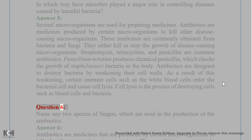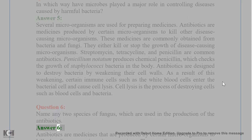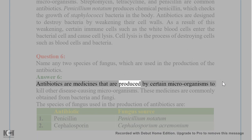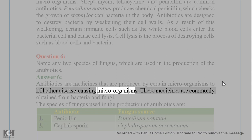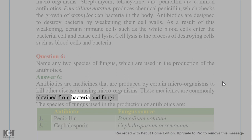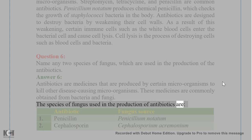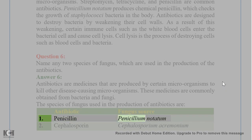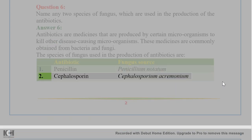Question 6. Name any two species of fungus which are used in the production of antibiotics. Answer 6. Antibiotics are medicines produced by certain microorganisms to kill other disease-causing microorganisms, commonly obtained from bacteria and fungi. The two fungal species used in antibiotic production are: 1. Penicillin — from Penicillium notatum; 2. Cephalosporin — from Cephalosporium acrimineum.